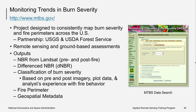The Monitoring Trends in Burn Severity (MTBS) project consistently maps burn severity and fire perimeters across the U.S. It's a partnership between the USGS and the USDA Forest Service. They use multiple data sources including remotely sensed imagery like Landsat, as well as in-situ data and the expertise of individuals who know the area to create burn severity classifications and fire perimeter data. These are things you can obtain directly without having to go through the process of doing those calculations yourself.